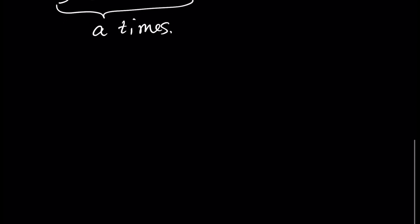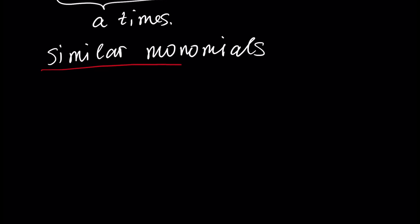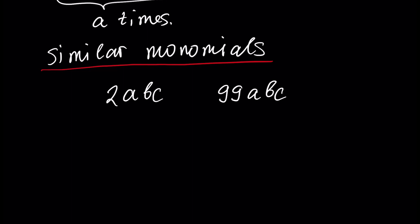Next, we have to define similar monomials. Monomials are similar if they are the same or differ only in a coefficient. For example, the monomial 2abc and 99abc are similar because they are the same but their coefficients are different. We can add these two similar monomials.